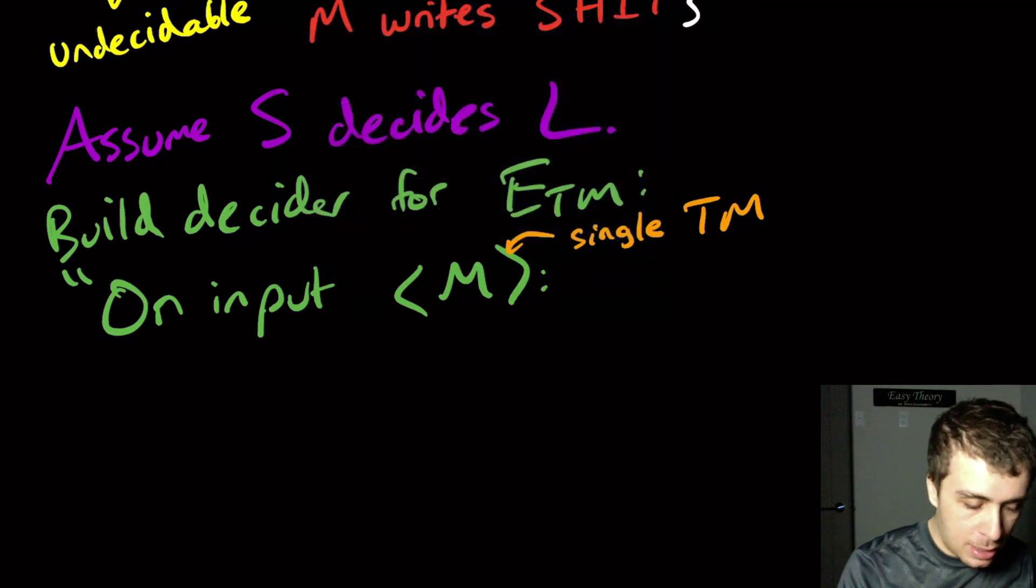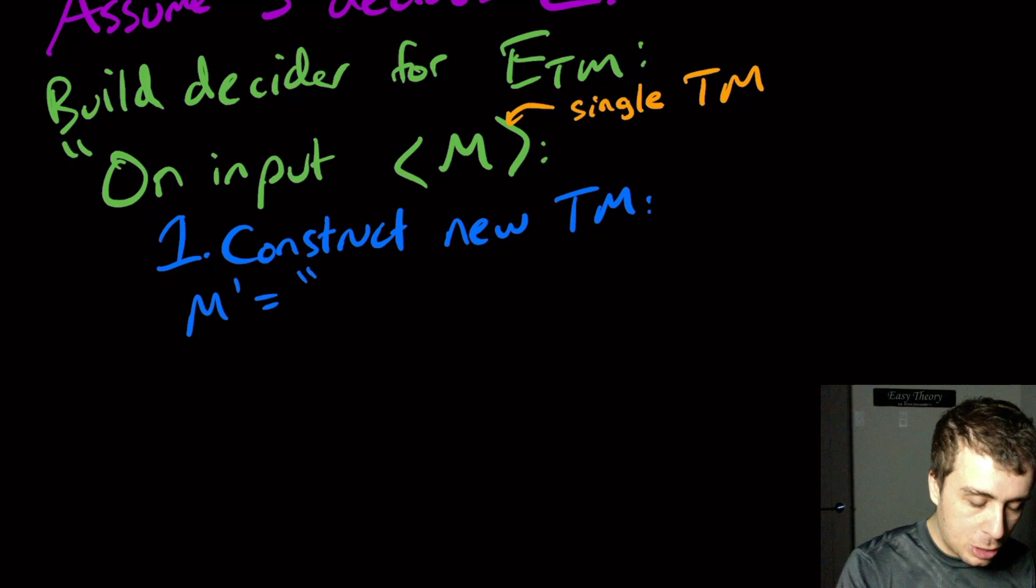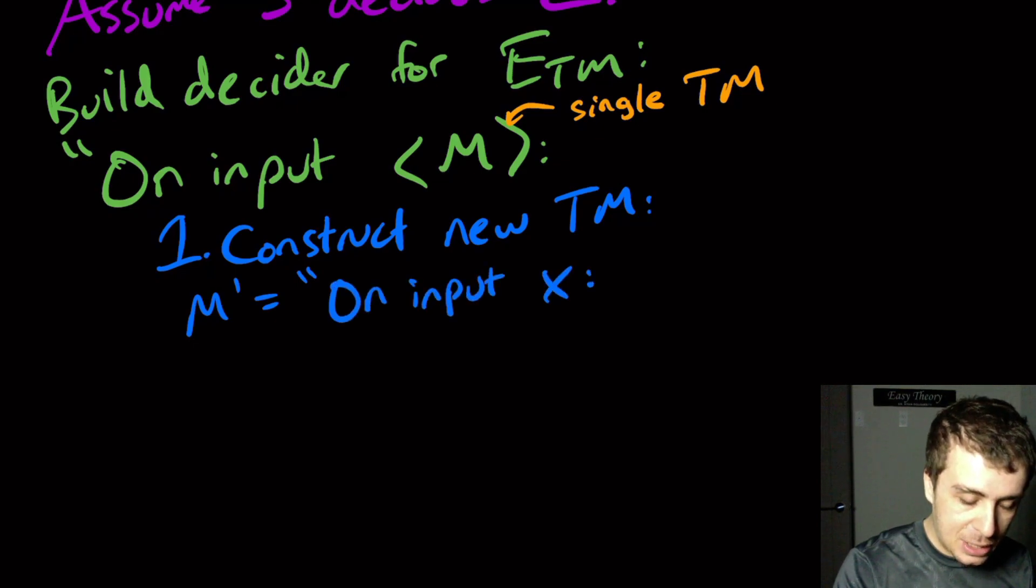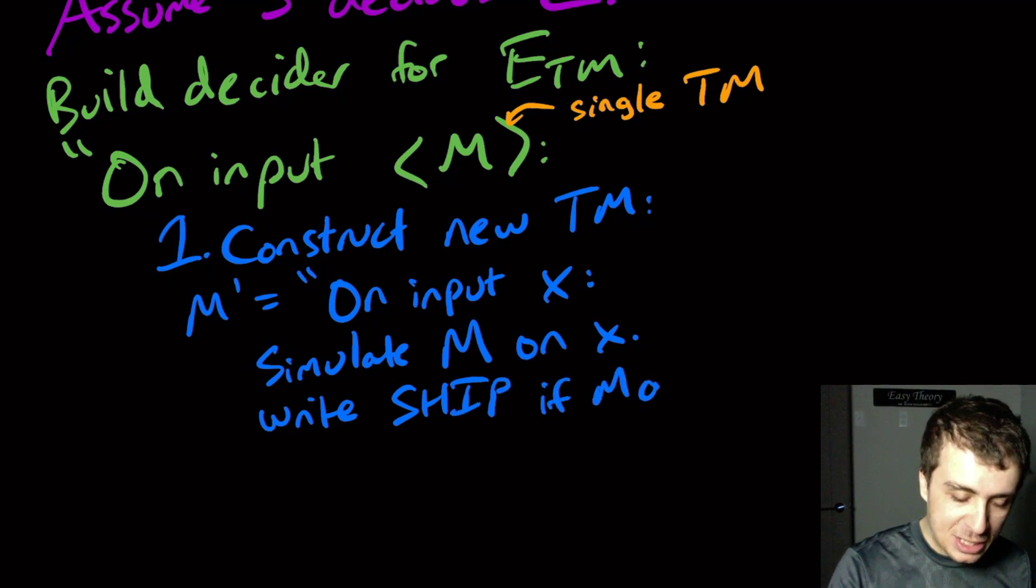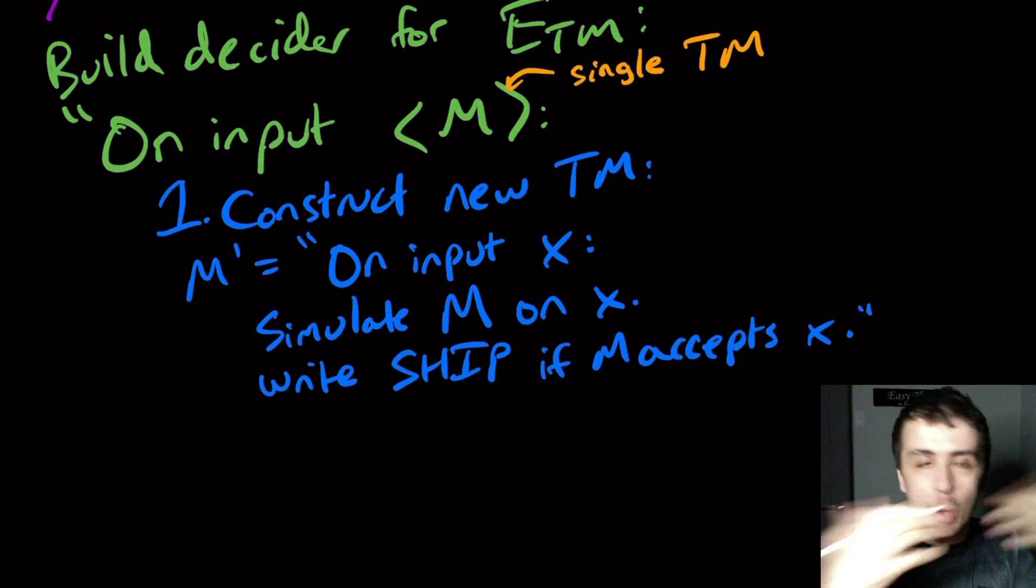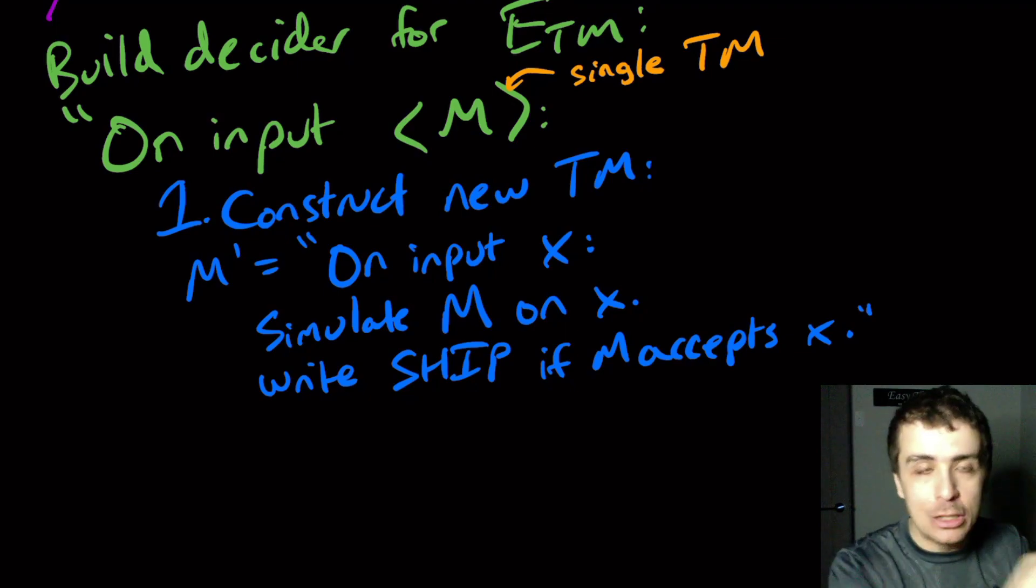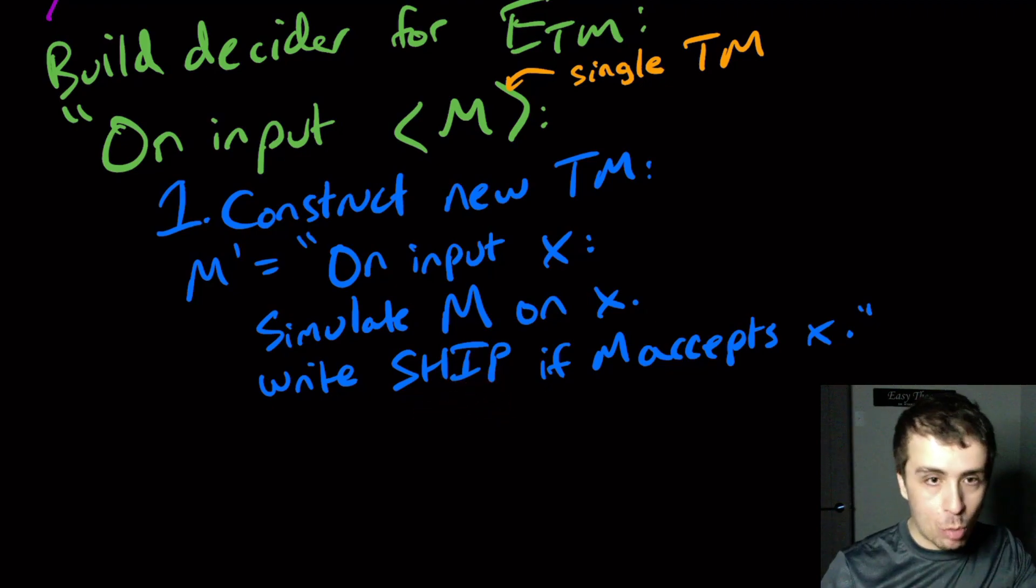Like all undecidability proofs, the first step here is to construct a new Turing machine. Let's call it M prime, which is going to be given some arbitrary input x. And what we're going to do is we're going to simulate the original machine M on x. And we will write the word ship if M accepts x. So effectively, it's just doing the normal M simulation. It's adding this little extra bit at the end. So like if it accepts, it writes the word ship and then accepts.